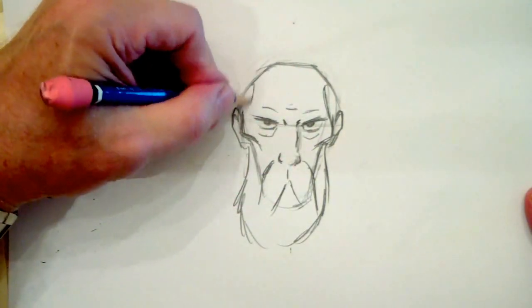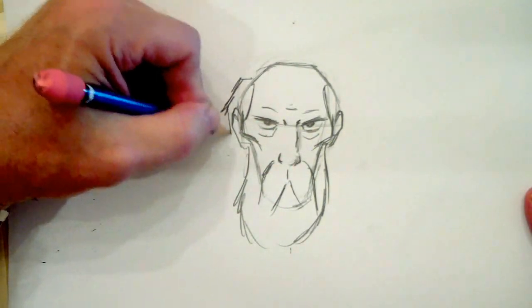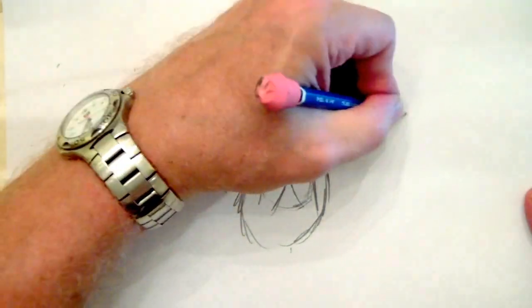Merlin is half human, half devil. That's where he gets his powers from. So I like to make the ears a little devilish to go along with the legend.